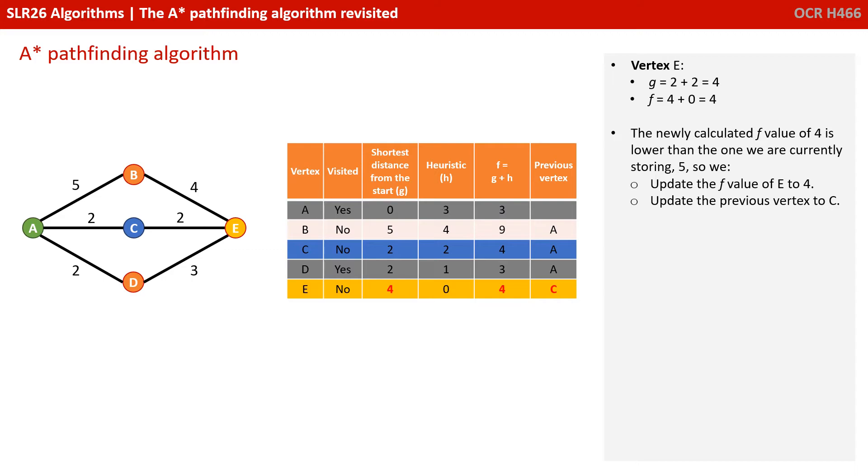Well, the newly calculated F value of 4 is lower than the one we were currently storing of 5, so this time we update the F value of E down to 4, and at the same time update the previous vertex to show that we've now come from C.